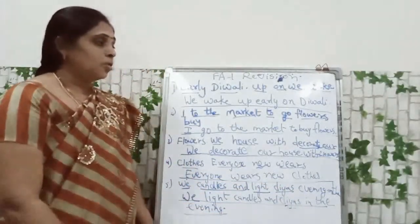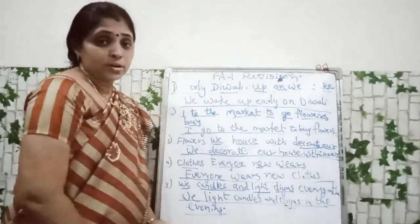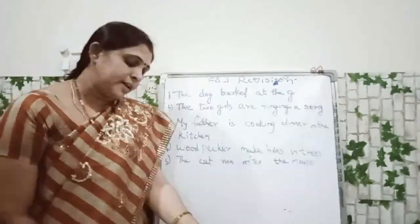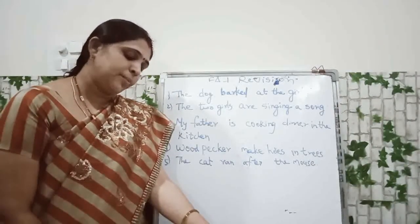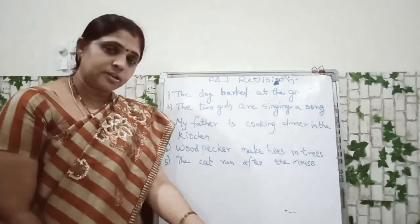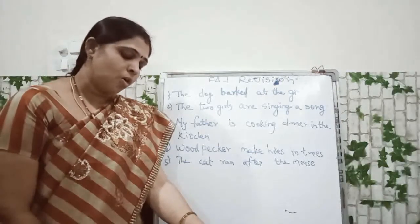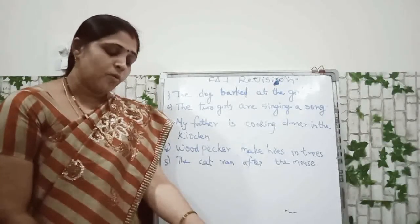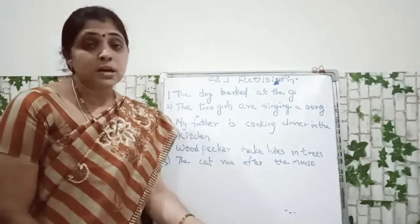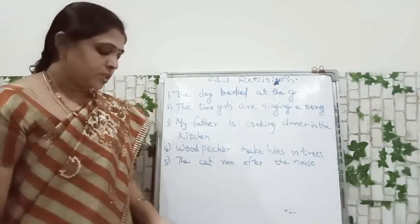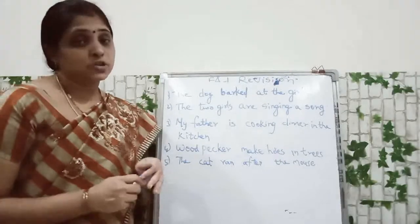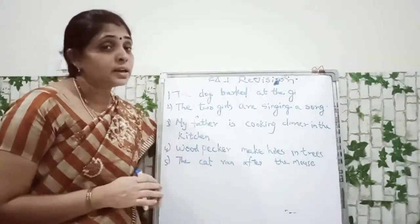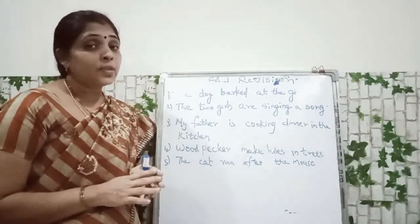So, these sentences are jumbled and you have to correct the sentence and write in the blanks. A sentence has two parts: a naming part and an action part. The naming part tells us who or what the sentence is about. Circle the naming parts and underline the action parts.